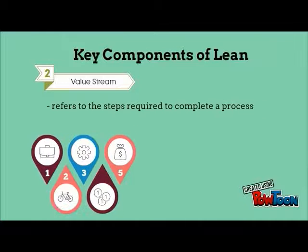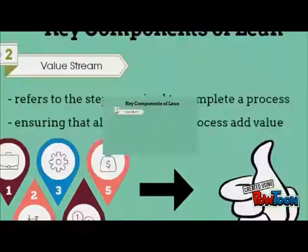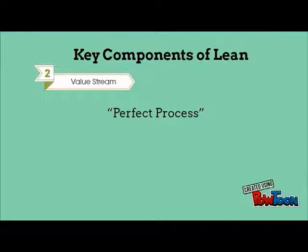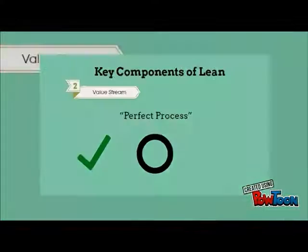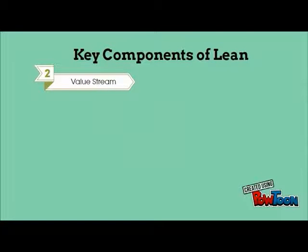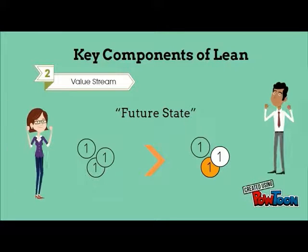Value stream refers to the steps required to complete a process, and value streaming involves ensuring that all steps in a process add value. In order to create the perfect process, you need to first identify which steps create clear value, are necessary but create no value, and create no value and must be eliminated. After eliminating wasteful steps, a new future state process can be mapped, and changes can be implemented and monitored to achieve this future state.